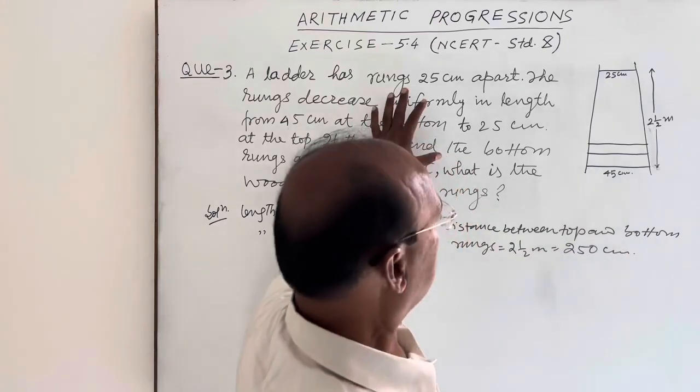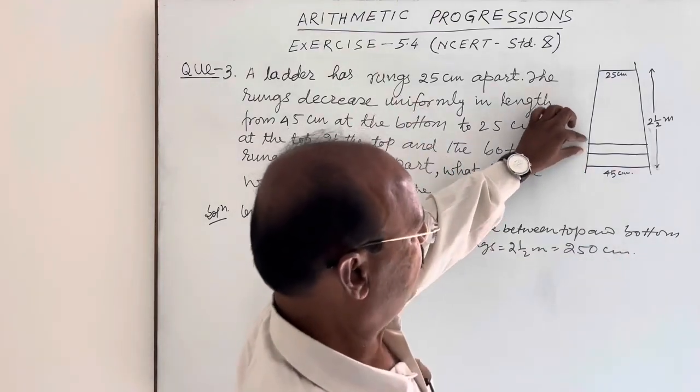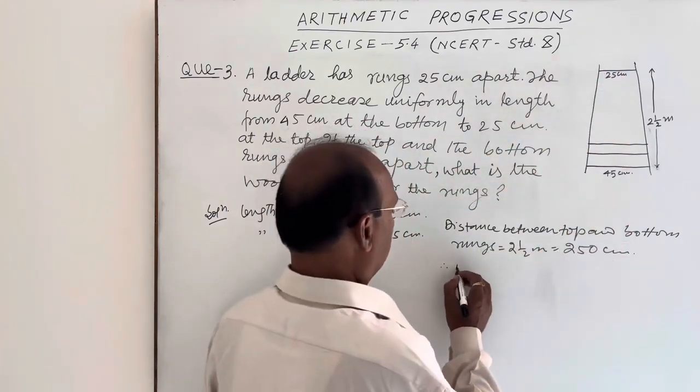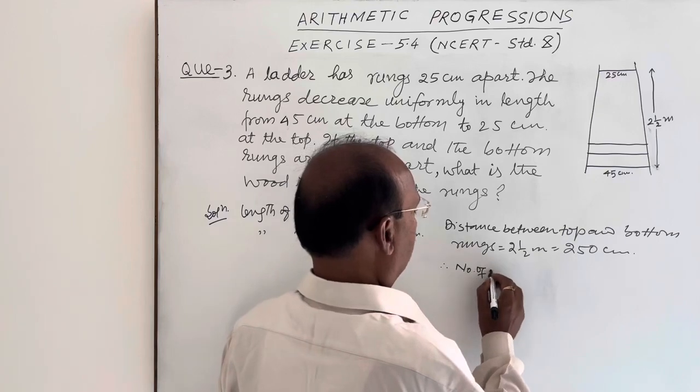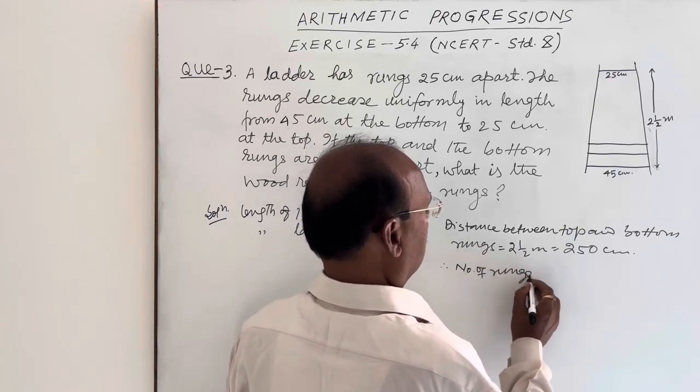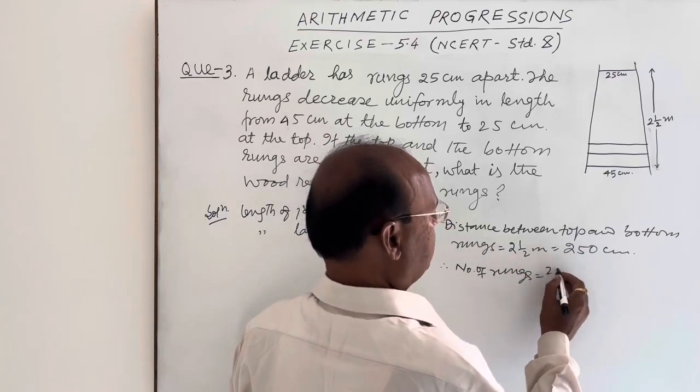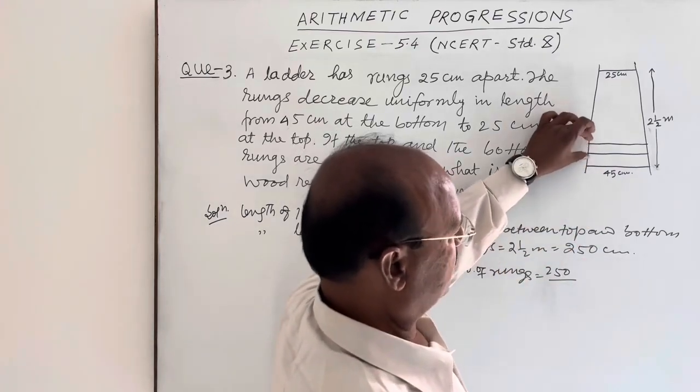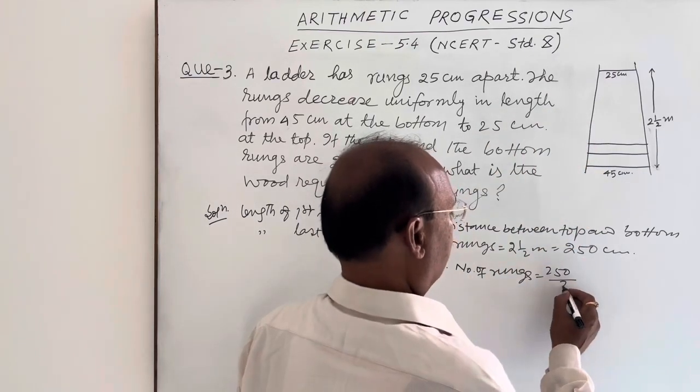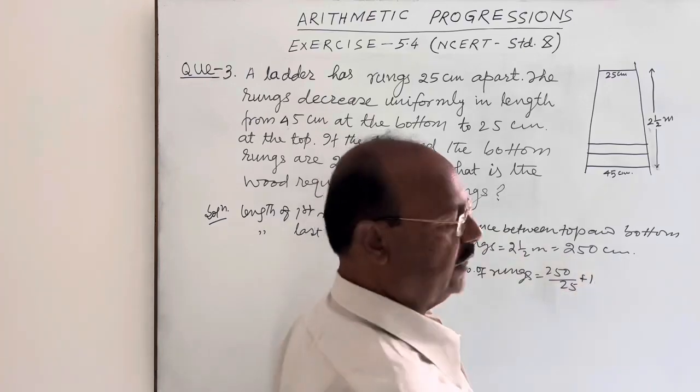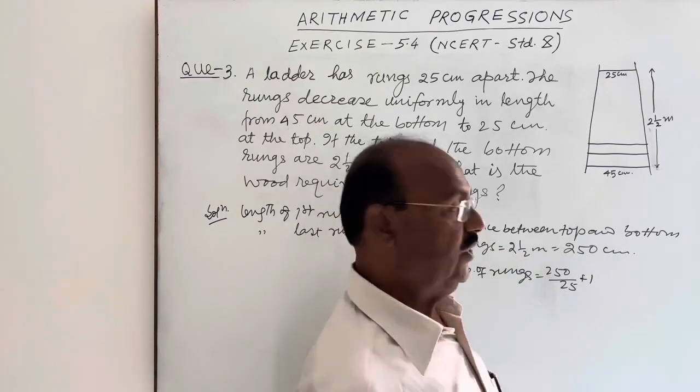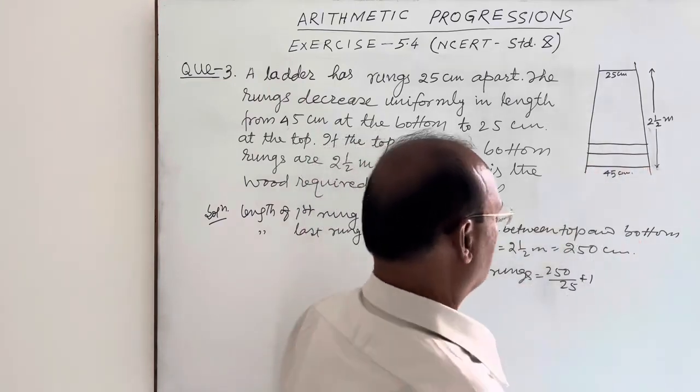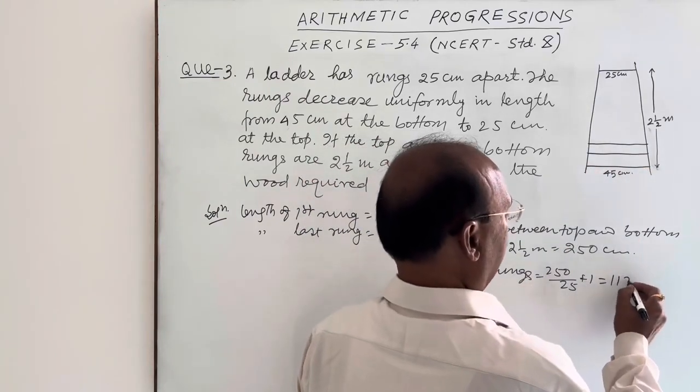And as given in the question, distance between two rungs is 25 cm. So here we can find out, therefore, number of rungs will be 250 cm divided by 25 cm plus one. Why plus one? Because in the beginning one rung is being used. So this is equal to 11 rungs.